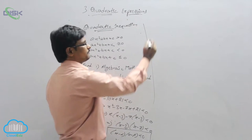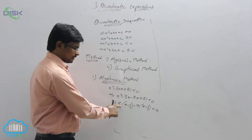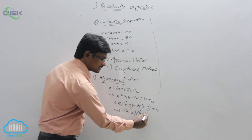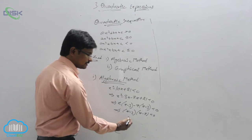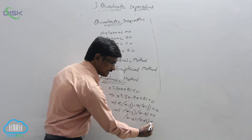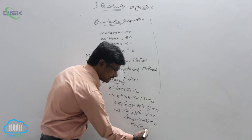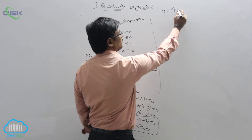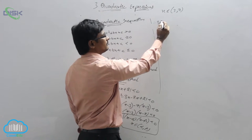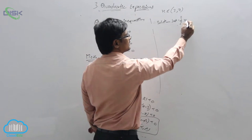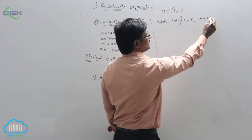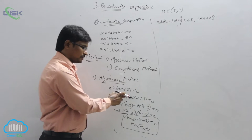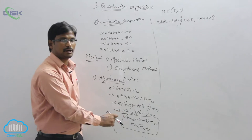For this example, we have (x minus 3)(x minus 7) less than 0, which is clearly in the form (x minus α)(x minus β) less than 0. So, x belongs to (3, 7). Therefore, the solution set is: x belongs to ℝ such that 3 < x < 7. These are the values that satisfy this quadratic inequation. In the algebraic method, we do the factorization and then apply the formula.